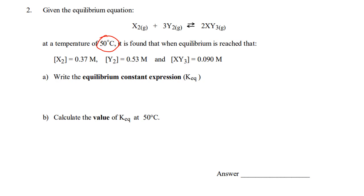So, let's write the equilibrium constant expression. Keq is products, which happens to be X2Y3, and that's, since there's a coefficient of 2 in front, it gets squared.